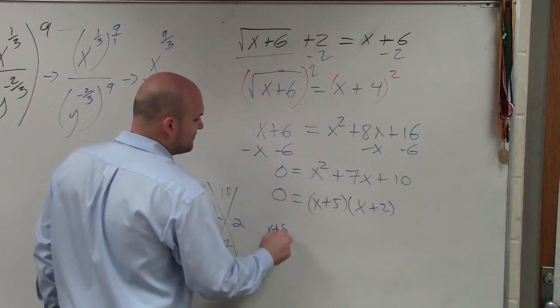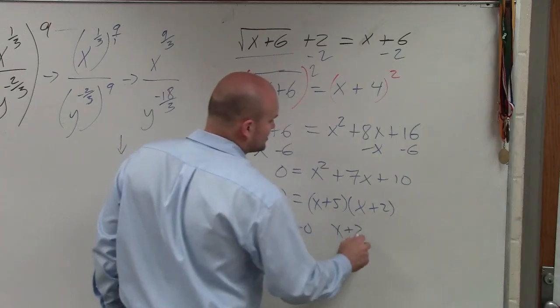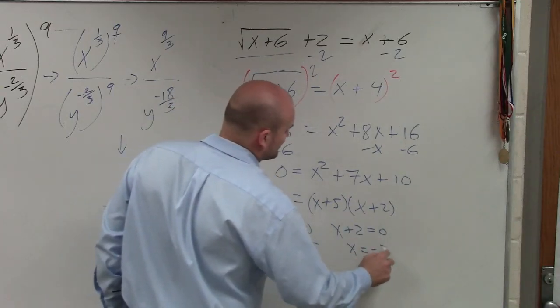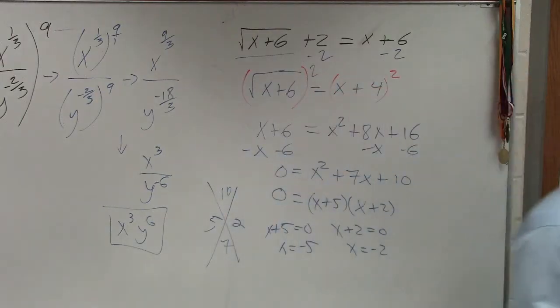Therefore, x plus 5 equals 0, x plus 2 equals 0. And x equals negative 5, and x equals negative 2. So therefore, I have two solutions.